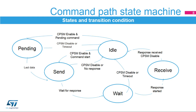The transmission and reception of commands is controlled by the command path state machine, or CPSM. When no command or response is in progress, the command path is in idle state. When the CPSM is enabled to send a command, the command path moves to send state until the last bit of the command is sent. Then, depending on whether a response is expected or not, the CPSM can return to idle state when no response is expected, or move to wait state and wait for a start bit on the command pin — the start of the response transmission. When a response start bit is detected within the allocated time period, the CPSM moves to receive state.